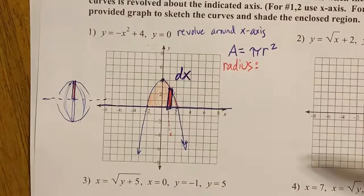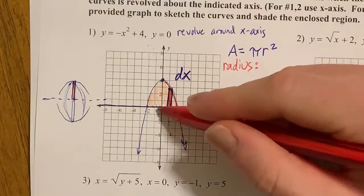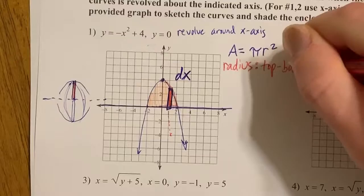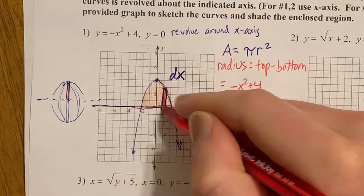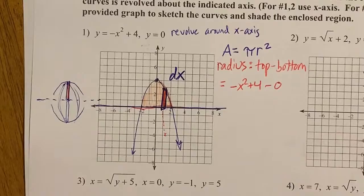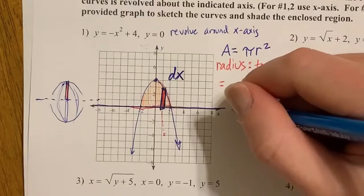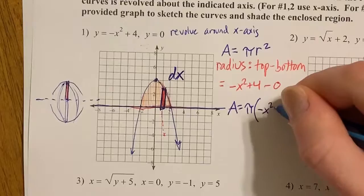It's the distance between. To find distance, you want to subtract, so we can do top minus bottom. The function on the top is this parabola, so we have negative x squared plus 4. The function on the bottom is just 0, so it's minus 0, but you don't really have to write that. So that's the radius of one of these circles. And then to find the area, we're π times the radius squared, so π times this whole thing squared.